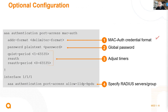Optional configuration includes: the format of the MAC address, a global password instead of MAC as username/password, and timers specifying when authentication should happen - the default is 60 seconds. You can also specify the RADIUS server group and control what traffic is allowed before authentication, such as LLDP or CDP.